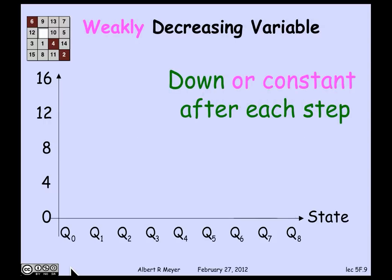A related idea is a weakly decreasing variable. These are not necessarily useful for proving termination, but they are often useful, as you'll see as we progress through the term, examples where it helps you analyze the behavior of the algorithm. A weakly decreasing variable is one which goes down or stays constant. It never gets larger.